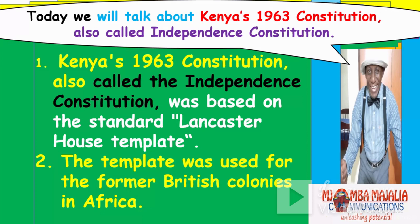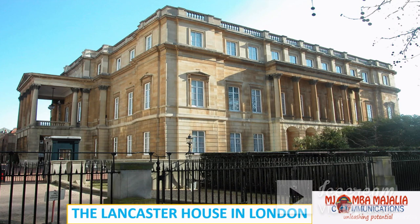The independence Constitution was based on the standard Lancaster House template. Britain had very many colonies, so when the colonies were getting their independence, they used one template — the same template in Ghana, the same in Kenya. That's why we call it the Lancaster House template. The Lancaster House, still standing in London, is quite iconic — that's where many constitutions for African countries under British rule were actually made.